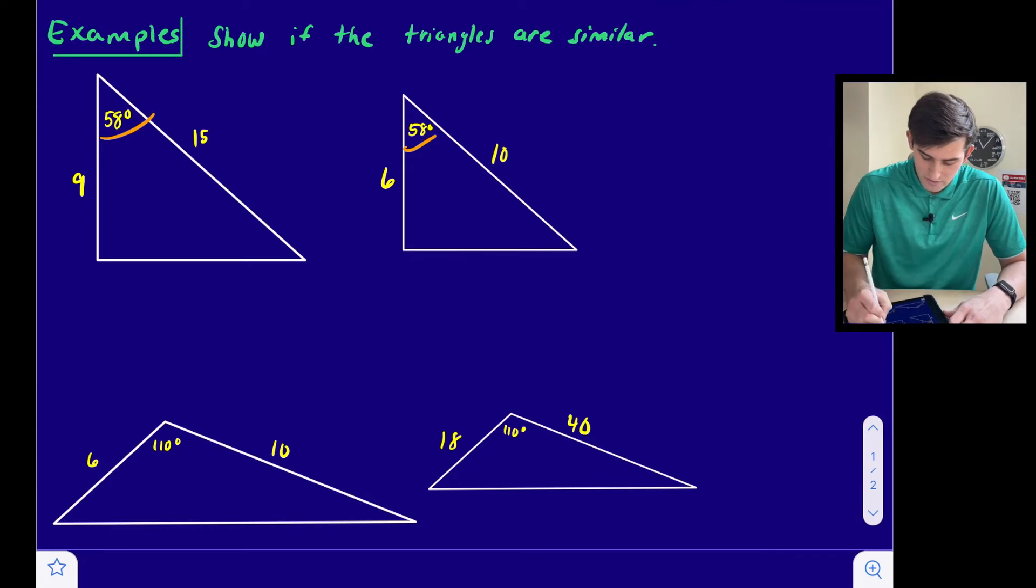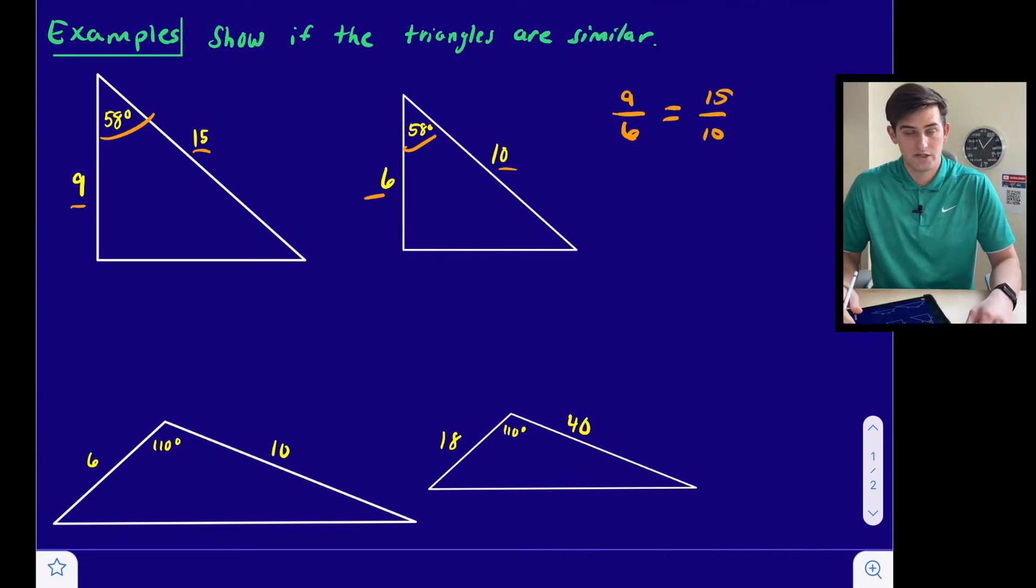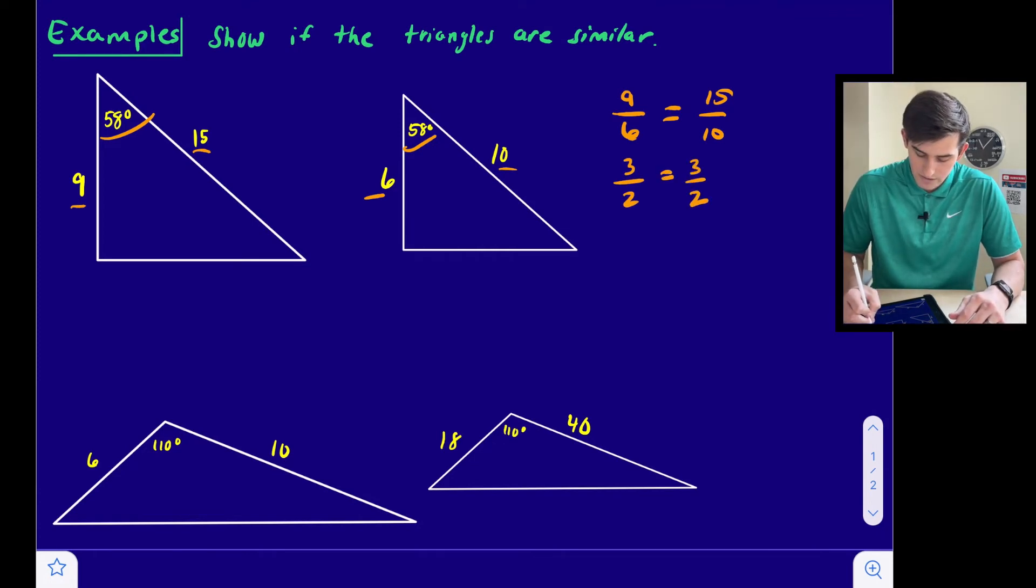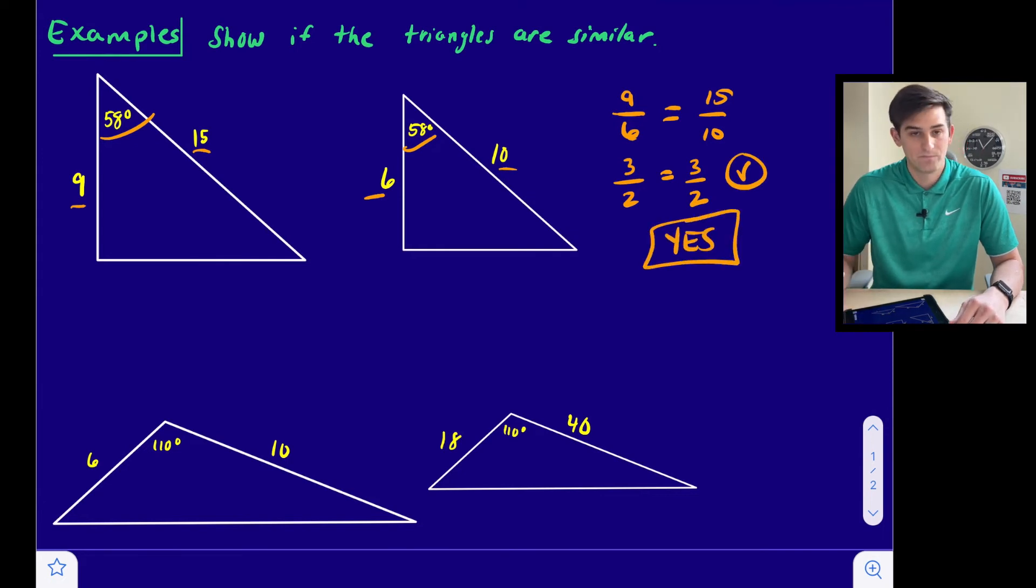Here let's do 9 over 6, comparing these two sides, and 15 over 10. If we reduce these fractions down to simplest form we can compare and see if they're the same. 9 over 6 would reduce to 3 over 2, and 15 over 10 would also reduce to 3 over 2. Since those are the same, we're going to say yes, these two triangles are similar.